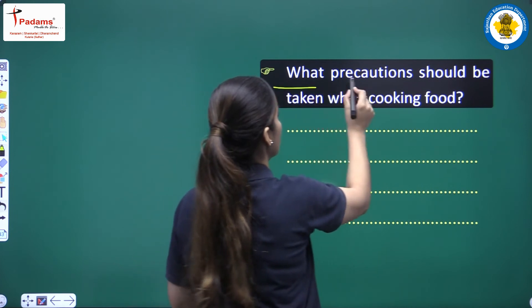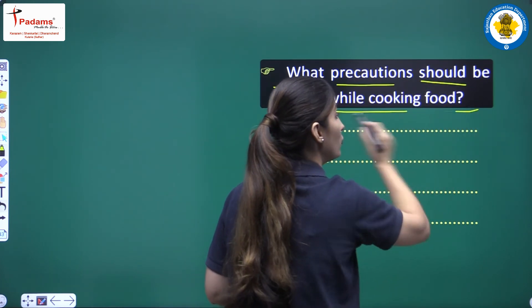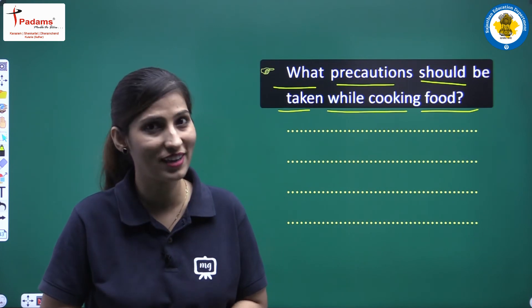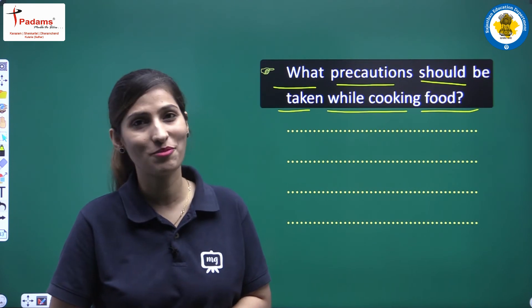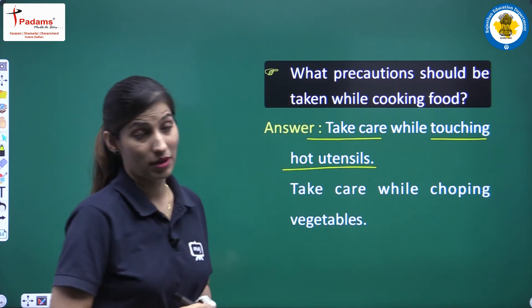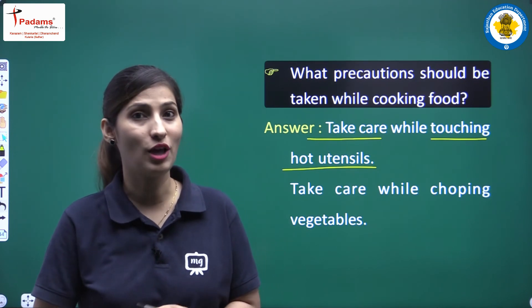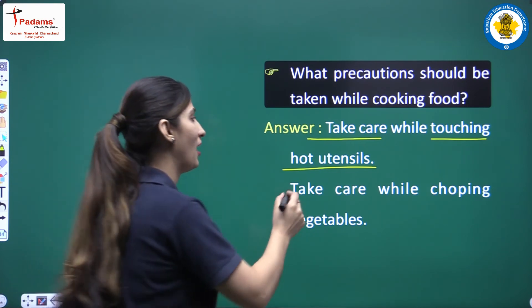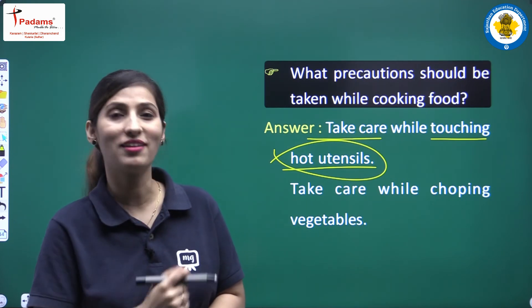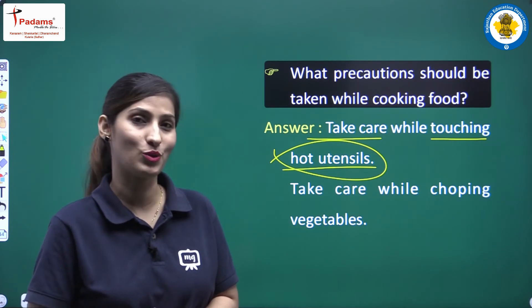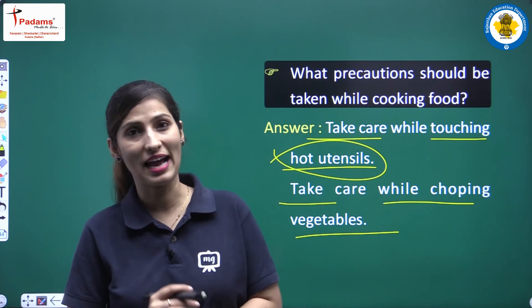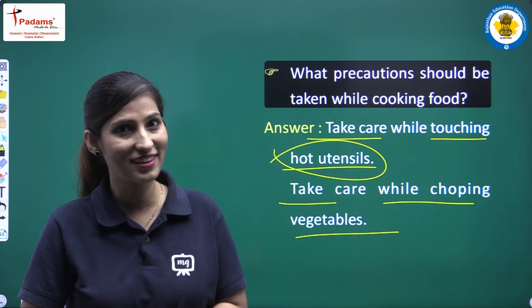Our next question is: what precautions should be taken while cooking food? Whenever we are cooking, we need to keep some precautions in mind. First: take care while touching hot utensils — if we are not careful, our hands will get burned. Always use a clean cloth or proper protection when handling hot utensils. Second: take care while chopping vegetables — make sure your hands don't get cut.